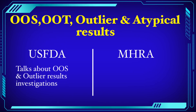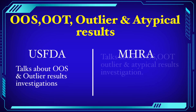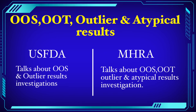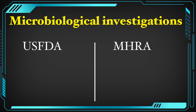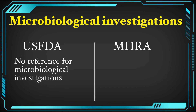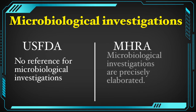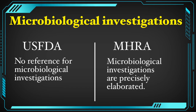The USFDA guideline talks about OOS and outlier results investigation. However, the MHRA guideline talks about OOS, OOT, outlier results, and atypical results investigation. Additionally, the USFDA guideline does not address microbiological investigations, whereas in the MHRA guideline, microbiological investigations are precisely elaborated.